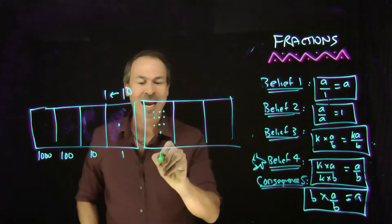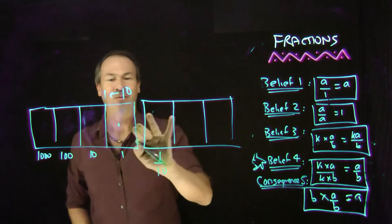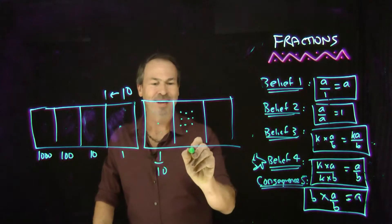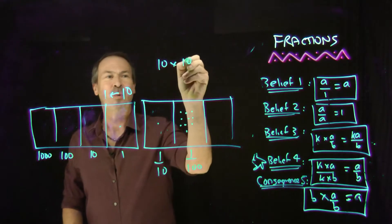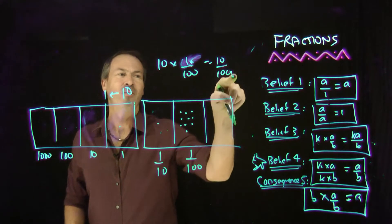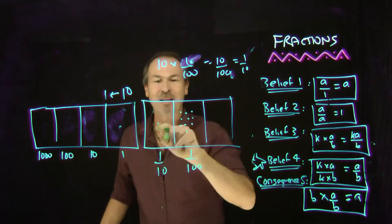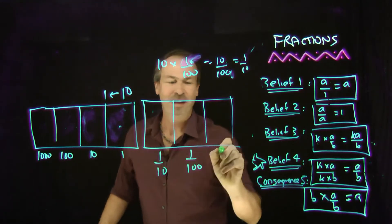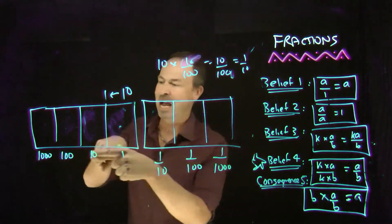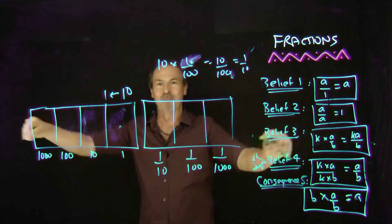10 tenths makes 1. By the same token, 10 of the next ones make one of those. They must be hundredths, because 10 one-hundredths — using the mechanics of fractions that's 10/100 = 1/10 — yes, it is 1 tenth. 10 of these makes one of those, and so on. We've now discovered places off to the right: the high powers of 10 going left, and the powers of 1/10 going right.